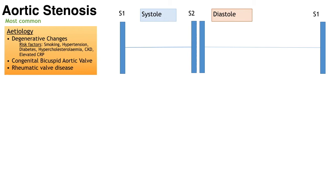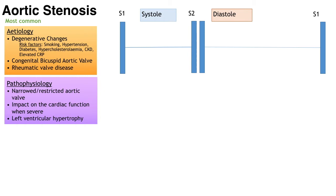Younger patients tend to present with a congenital bicuspid aortic valve, which has the same pathophysiology as degenerative changes but occurs a little earlier. This is more common in patients with coarctation of the aorta and Turner's syndrome. In terms of pathophysiology, the valvular endocardium is damaged by abnormal blood flow, initiating an inflammatory process similar to atherosclerosis. This leads to calcium deposition on the valve, which occurs slowly and is subclinical until the disease is fairly advanced. Progressive calcium deposition limits the aortic valve's mobility and eventually produces stenosis.